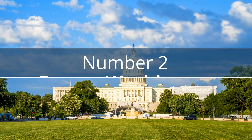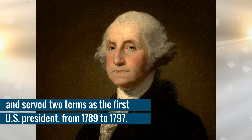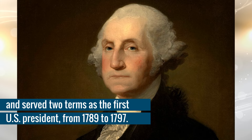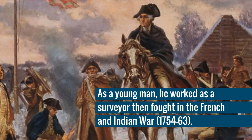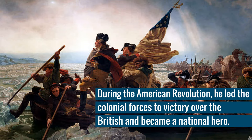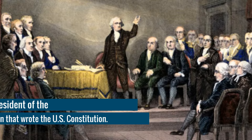Number 2: George Washington. George Washington was commander-in-chief of the Continental Army during the American Revolutionary War between 1775 and 1783 and served two terms as the first US president from 1789 to 1797. The son of a prosperous planter, Washington was raised in colonial Virginia. As a young man, he worked as a surveyor, then fought in the French and Indian War. During the American Revolution, he led the colonial forces to victory over the British and became a national hero. In 1787, he was elected president of the convention that wrote the US Constitution.